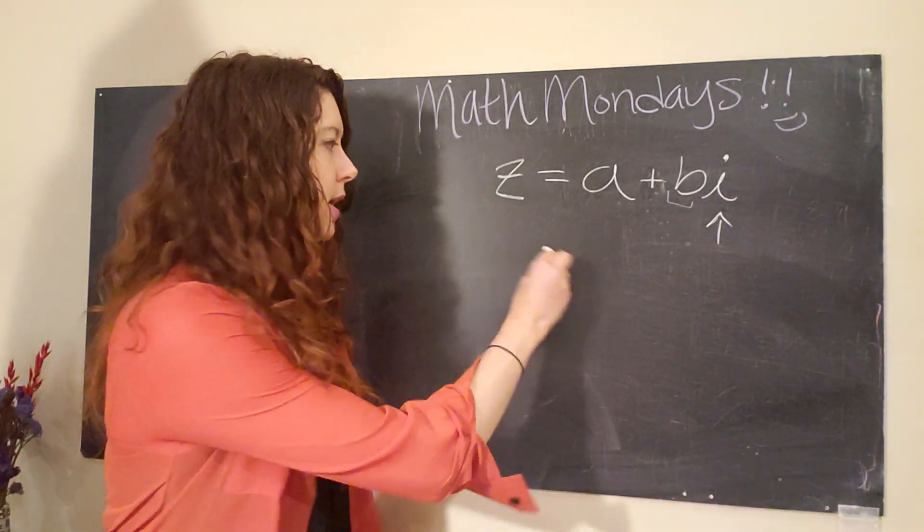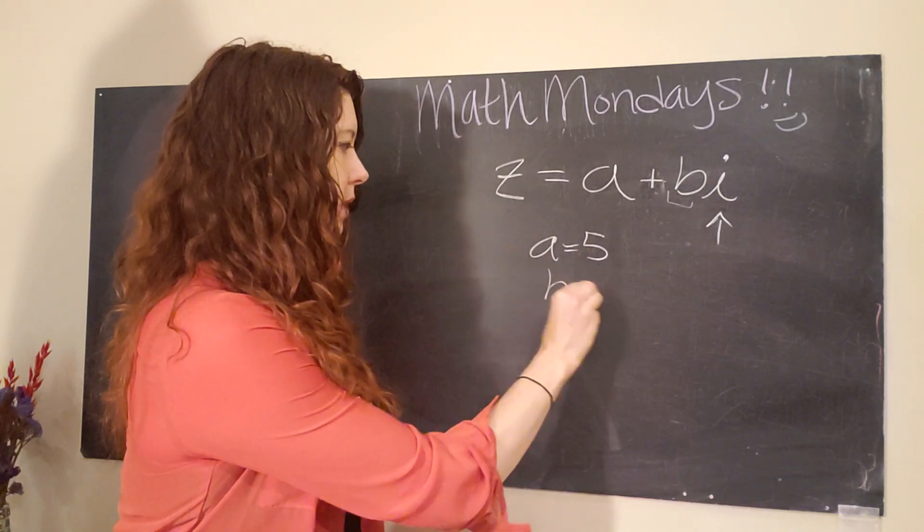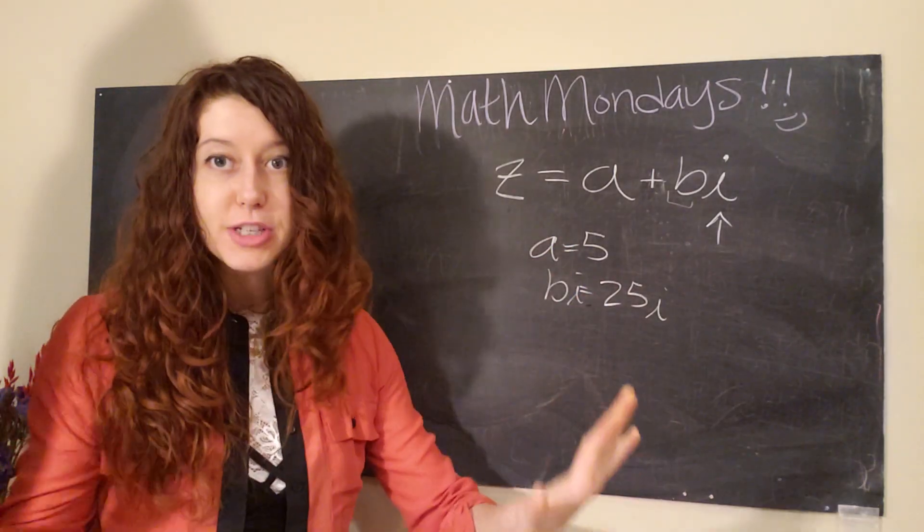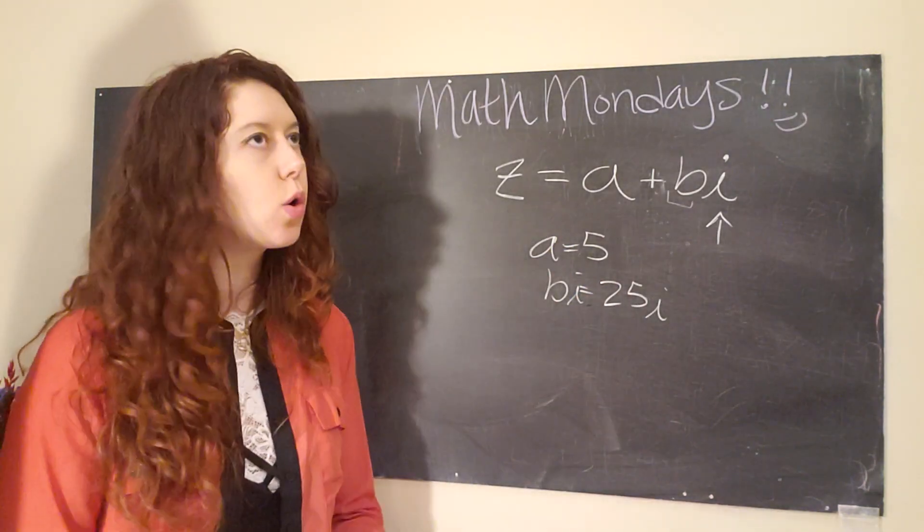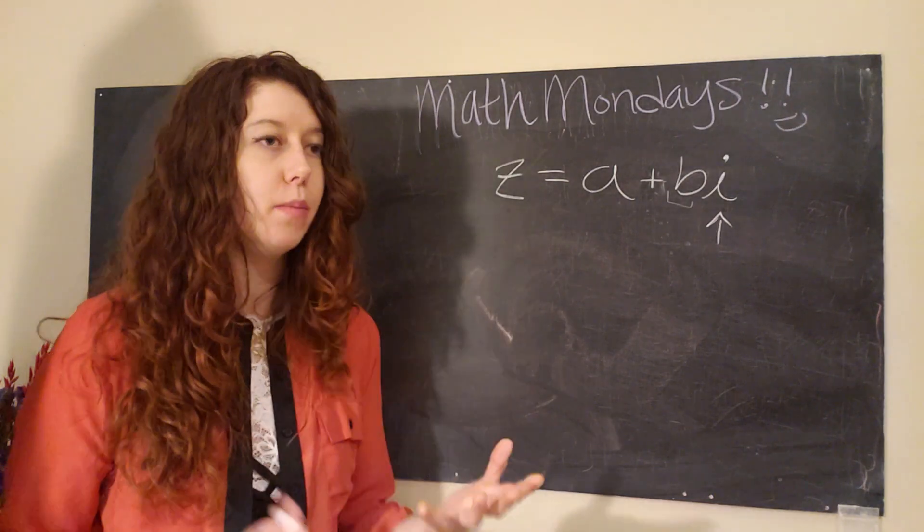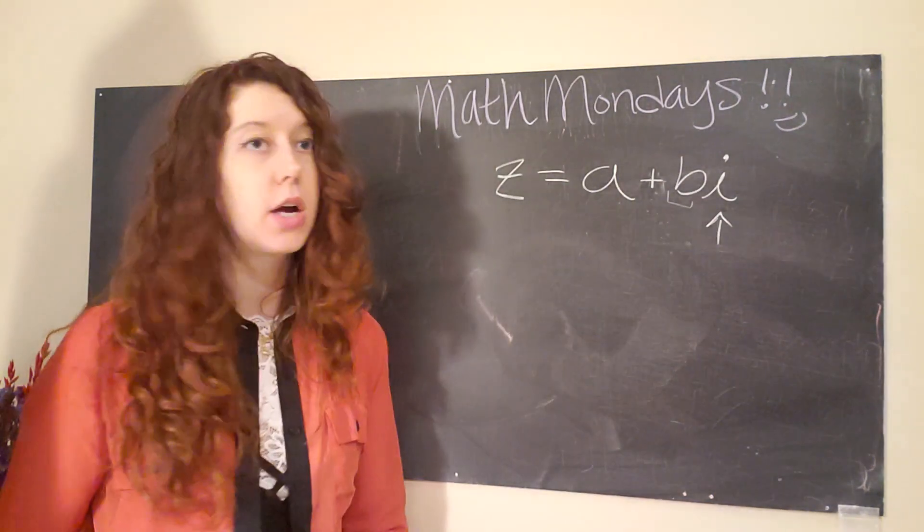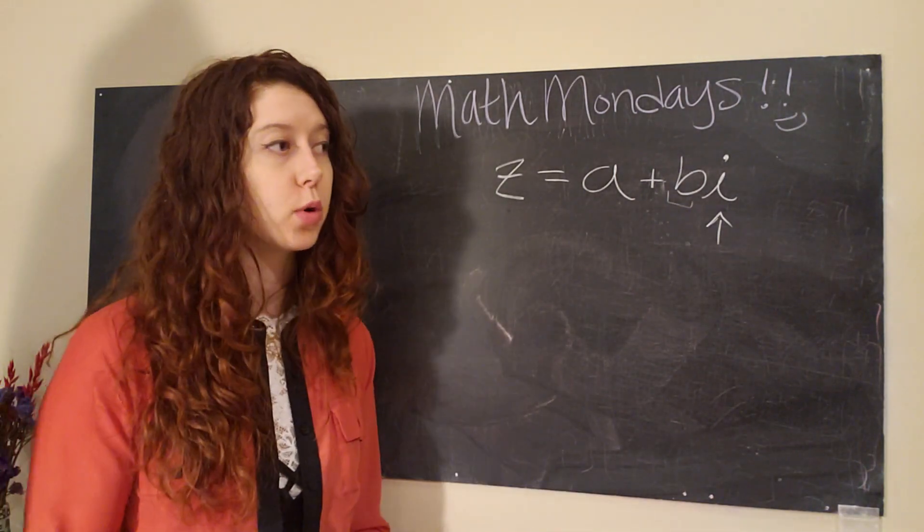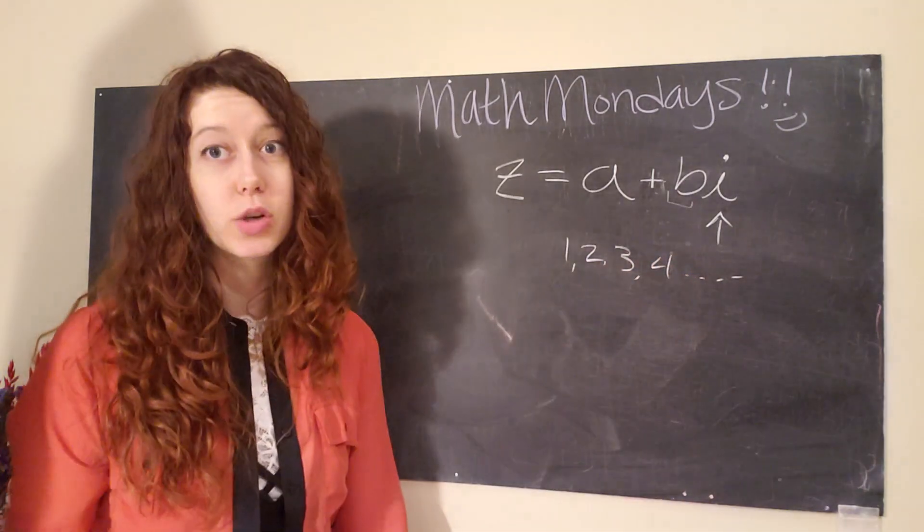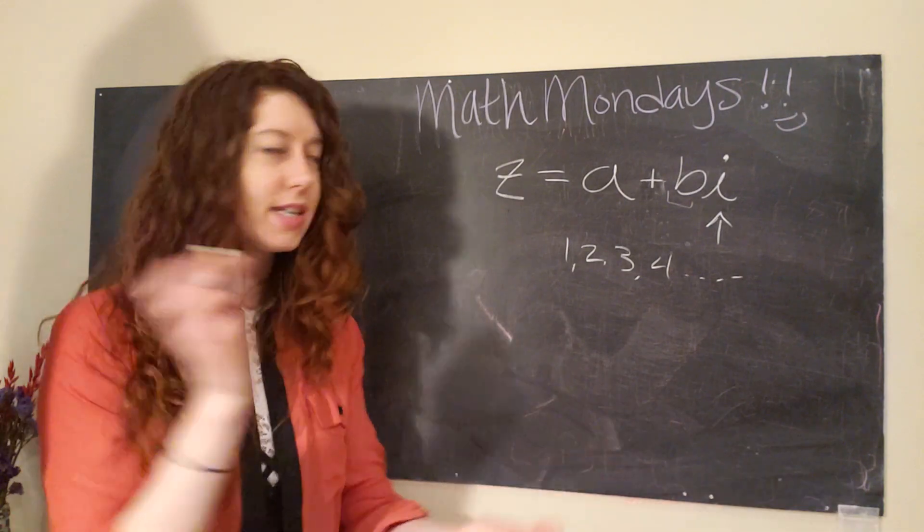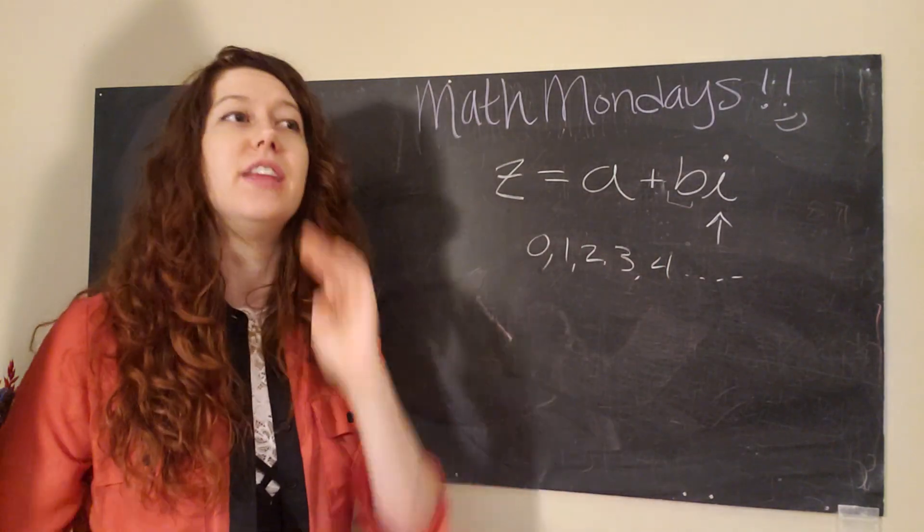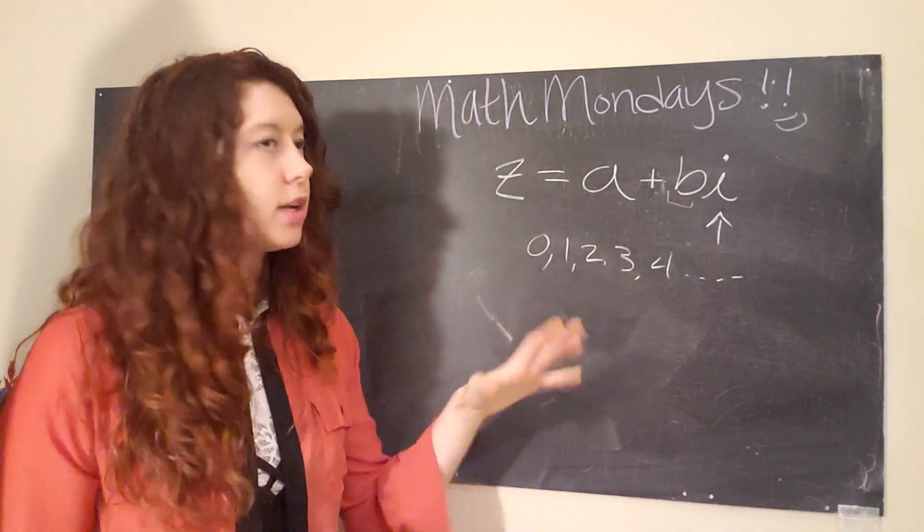So to understand that, it helps us to backtrack and think about how we have come up with the number line in the first place. Originally, folks used whole numbers to count: one, two, three, four, etc. Eventually, they were like, wait, what if you have nothing? That's a wild concept. So they threw in zero. Zero was not always included in the way that humans counted.